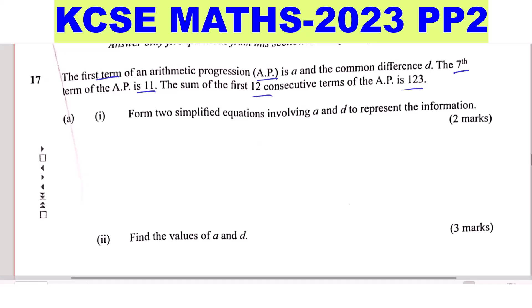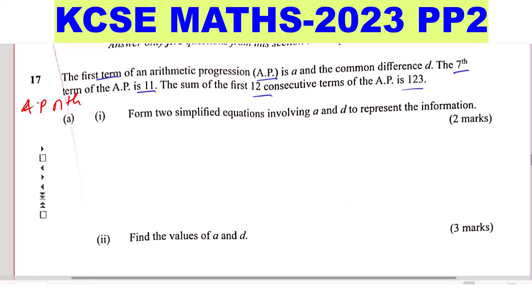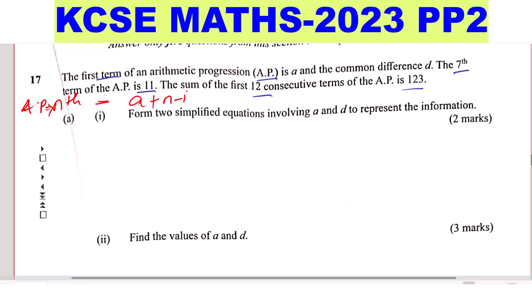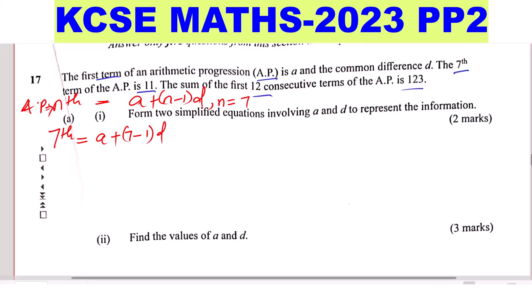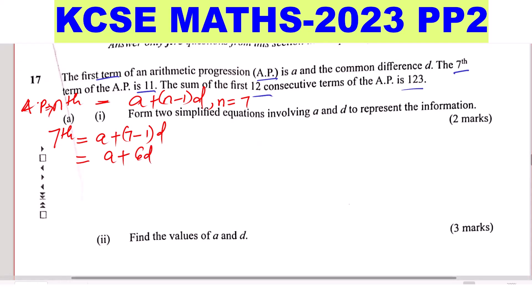The first thing to understand is how we get the nth term of an AP. The nth term is given by A plus (N minus 1) D. For instance, if you want the seventh term, substitute N with 7: A plus (7 minus 1)D gives A plus 6D. Since the seventh term is 11, that gives the first equation: A plus 6D equals 11.